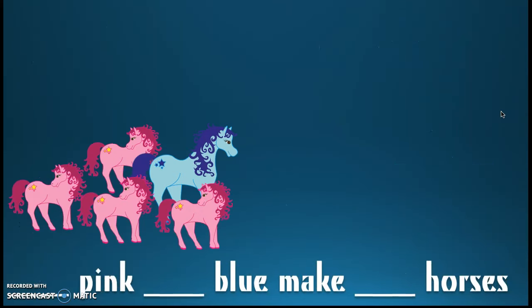Let's try another one — oh, what about these pretty horses? My sentence says: blank pink, blank blue, make blank horses. So let's start with the pink horses. How many pink horses are there? One, two, three — there are four pink horses. And how many blue? One blue horse. Now if I have four pink and one blue, how many horses do I have all together? I have five horses. If you need to, you can count on — say four and then count on to five, or you can just count them all: one, two, three, four, five.